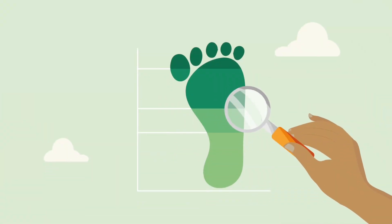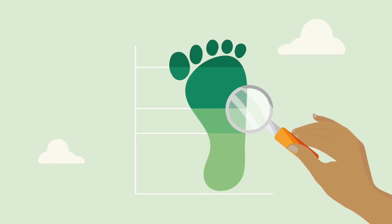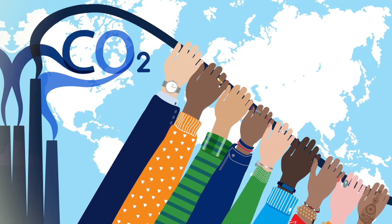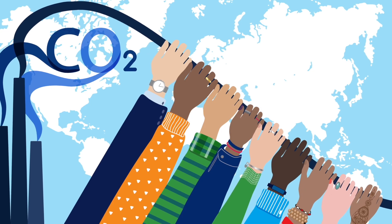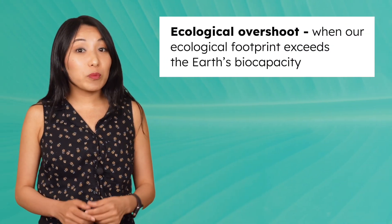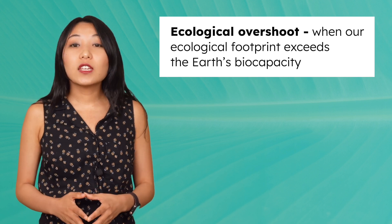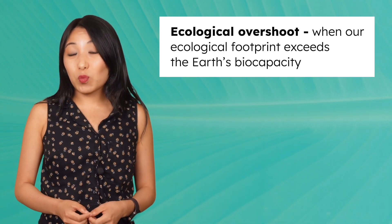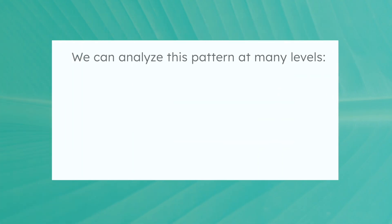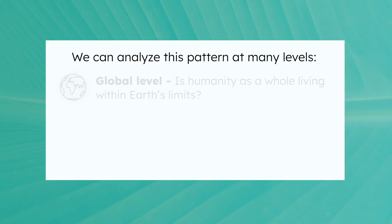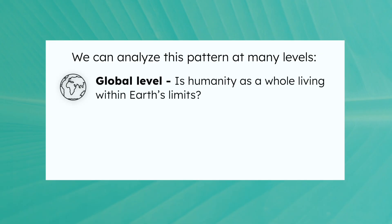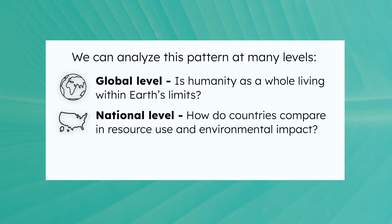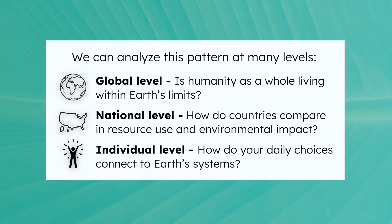The good news? We can use data like ecological footprints and biocapacity to help us understand the impact of our choices, so we can make decisions that move us closer to living within Earth's limits. The moment when our ecological footprint exceeds the Earth's biocapacity is called ecological overshoot. It means we are using more resources than nature can replace, and producing more waste than Earth can absorb. We can analyze this pattern at the global level, the national level, and the individual level.